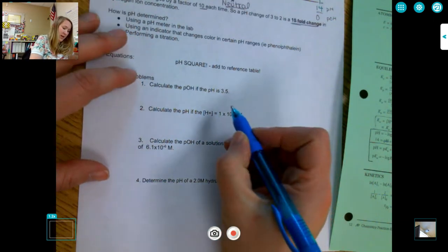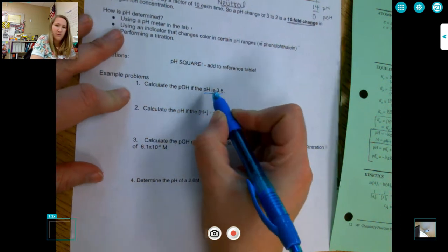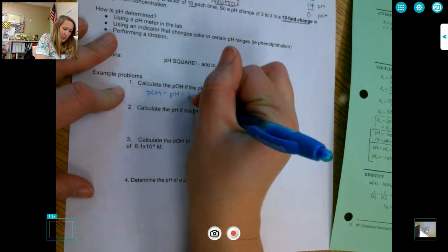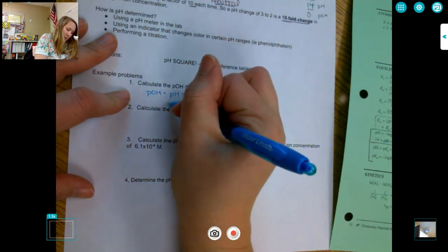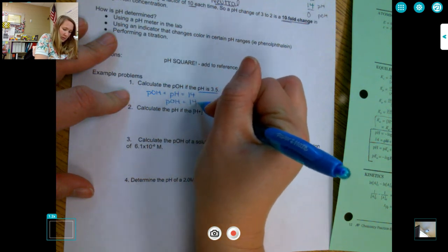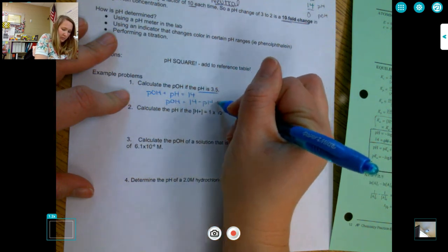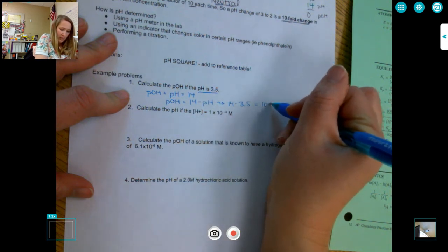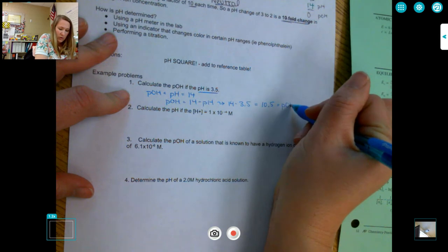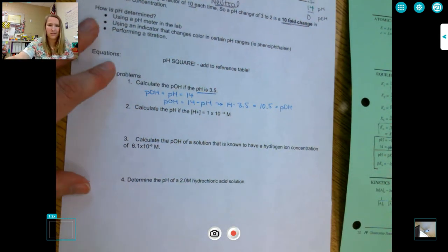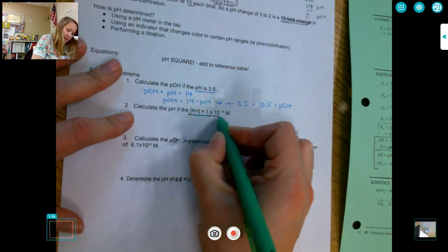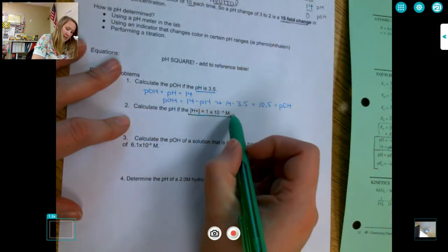So if I have a pH of 3.5 and I want to find the POH. I know that POH plus pH equals 14. So if I want POH, 14 minus pH, 14 minus 3.5 is 10.5. So 10.5 is my POH. No units on pH or POH.